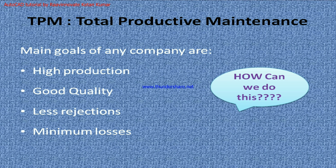The main goal of any company or any organization — the ultimate goal is: number one, high production. Everyone wants that the production should be higher, along with good quality, with less rejections, and losses should be minimum. Ultimately all the combination of these four will give us the maximum output in terms of cost and everything. So the question arises: how can we do this? How can we control all these parameters?